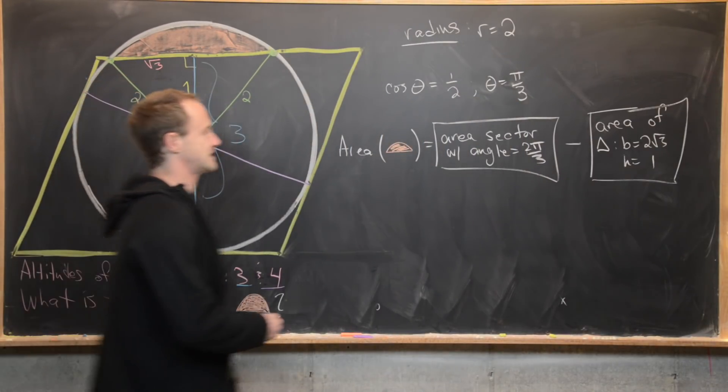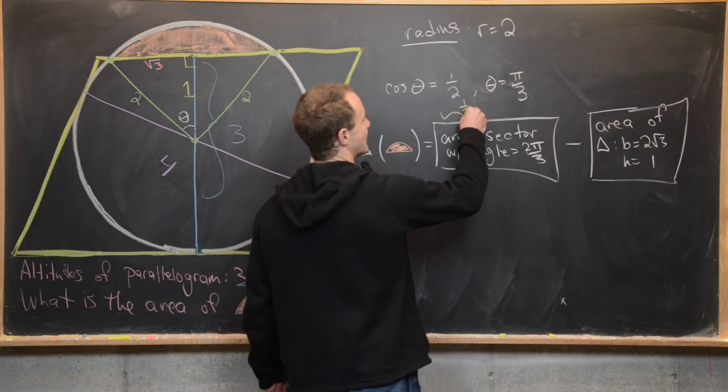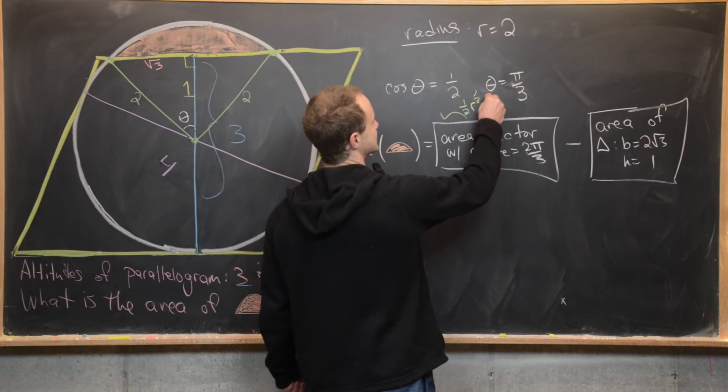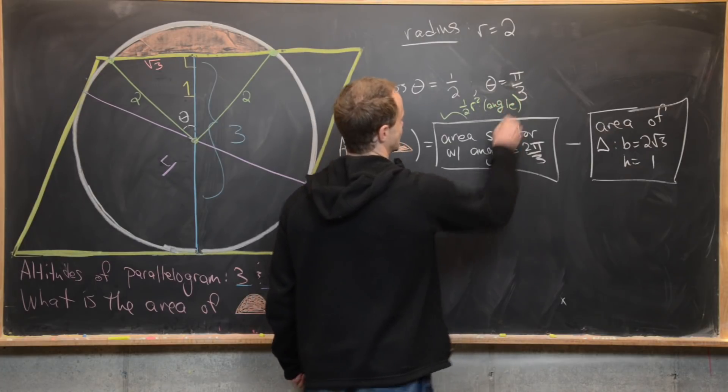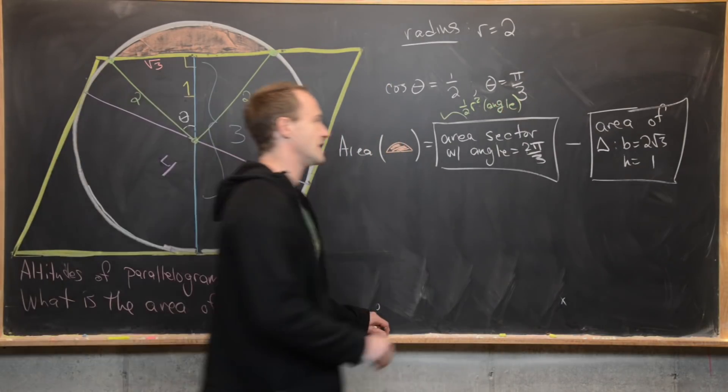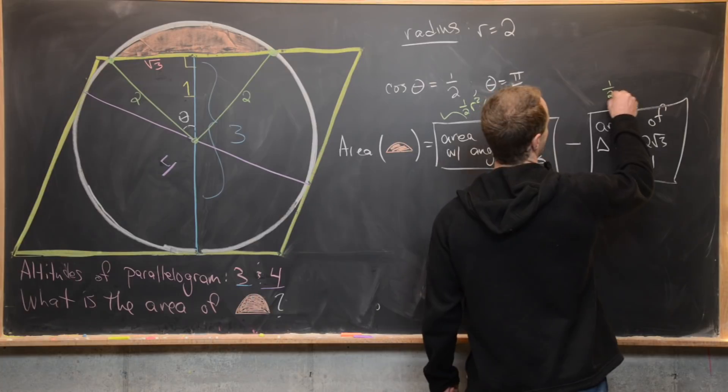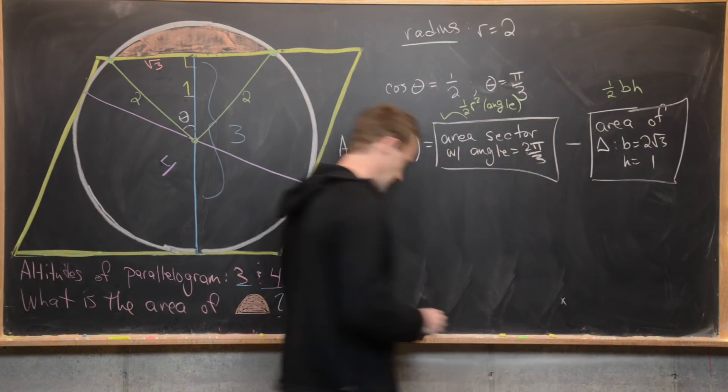So area of a sector of a circle, well, that's given by one half radius squared times the angle measurement. And then area of a triangle, well, that's just one half base times height. That's even more well known.